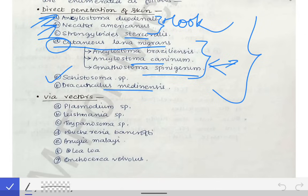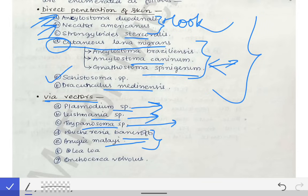Via vectors, the parasites transmitted are Plasmodium species which causes malaria, Leishmania species which causes visceral leishmaniasis, Trypanosoma species which causes sleeping sickness. For Plasmodium the vector is Anopheles mosquito, for Leishmania it is the sandfly, for Trypanosoma it is the tsetse fly. Then for Wuchereria bancrofti and Brugia malayi, mosquitoes cause the transmission of these parasites.